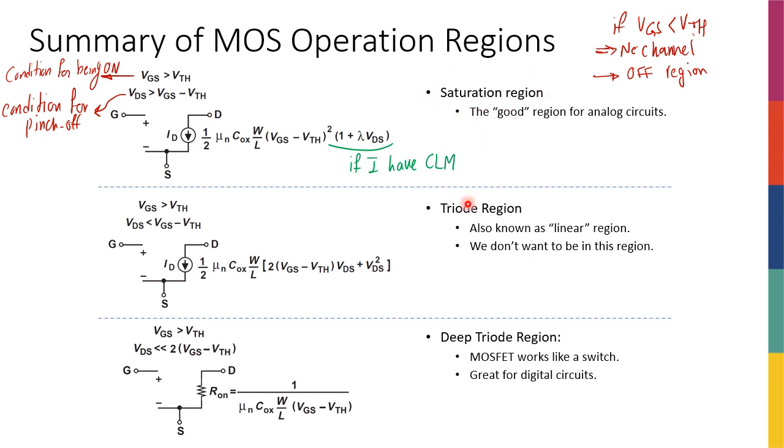The second region is the triode region, where again my transistor is on - VGS is greater than VTH - but my VDS hasn't reached the point that there's a pinch-off in my transistor. In this case, my current is actually a function of both VGS and VDS. It's not a linear relationship with VDS, but we saw that if VDS is actually very small, then this becomes a linear relationship.